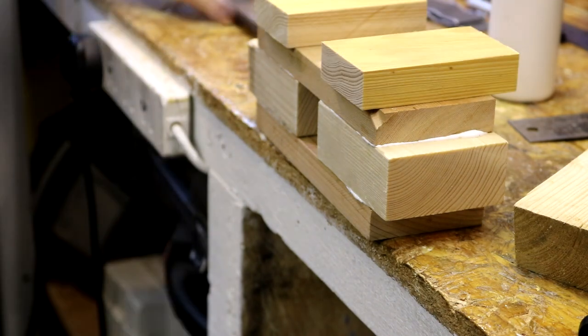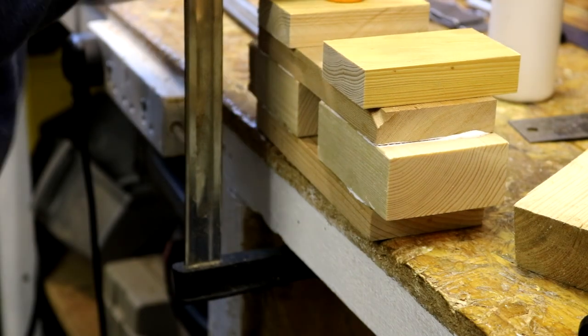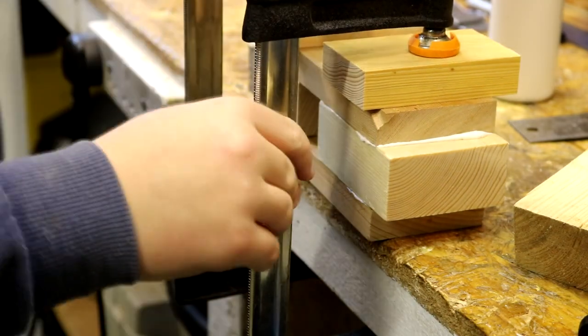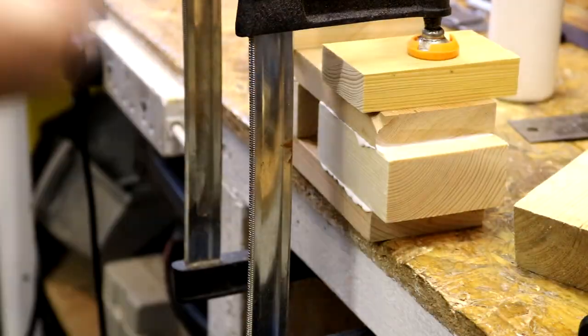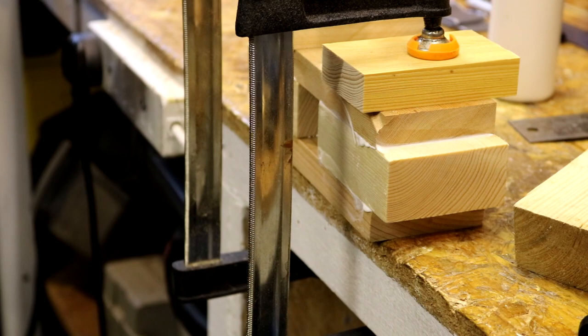You can also see one of the corners is nicked on the top piece of wood as it got caught on the table saw blade slightly, but as you'll see later this doesn't affect the mallet as they get planed down anyway.